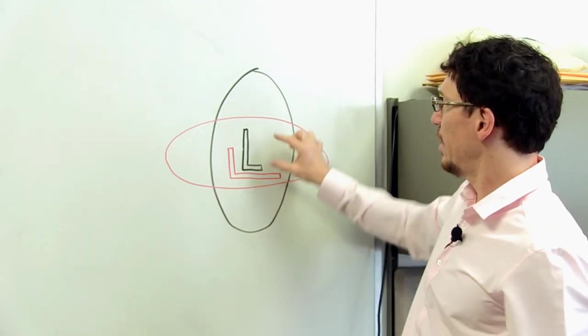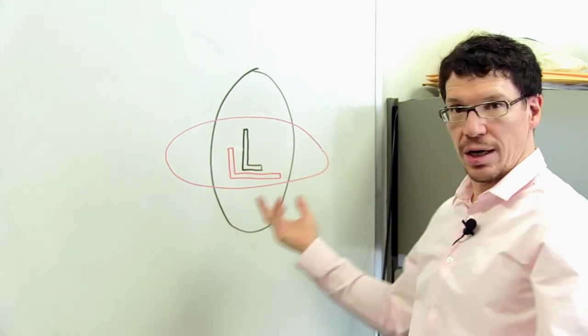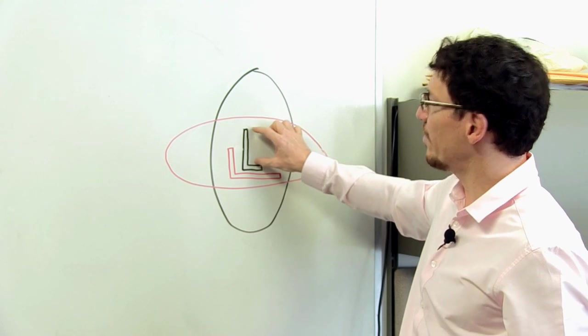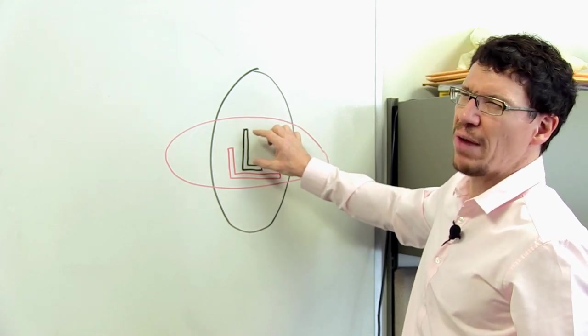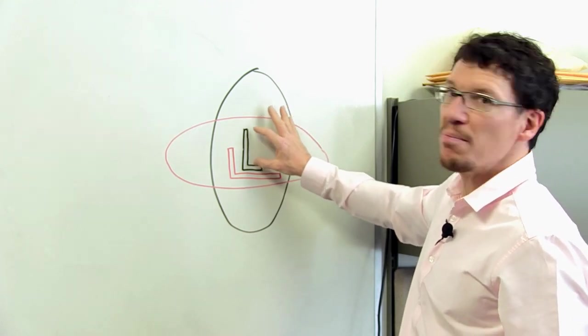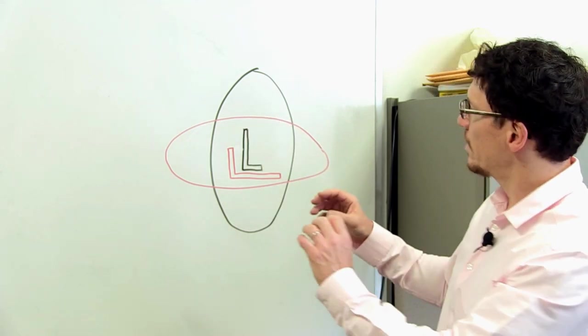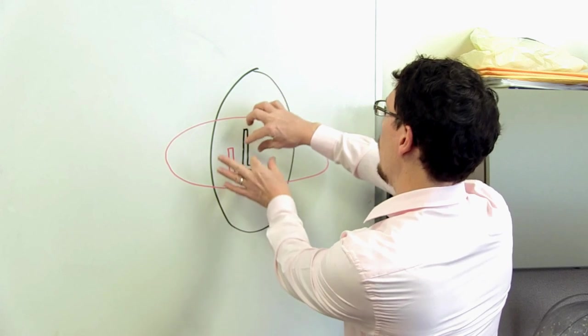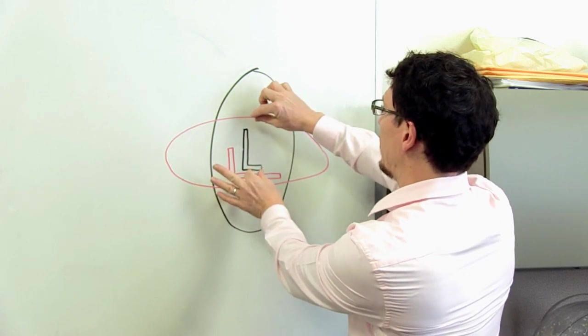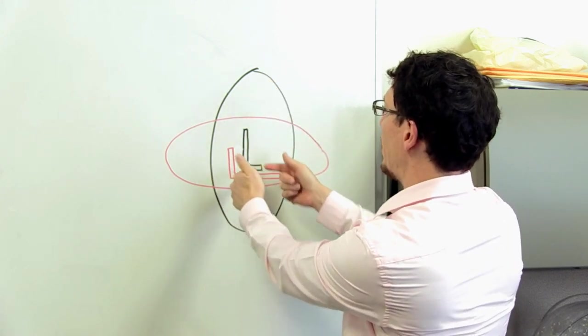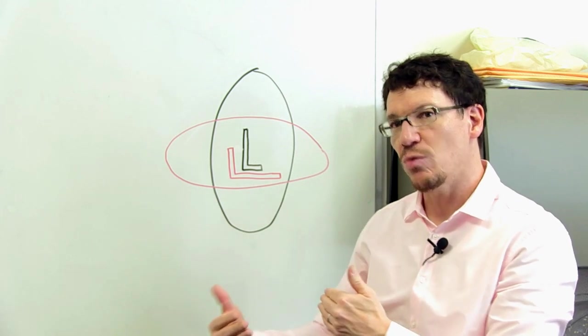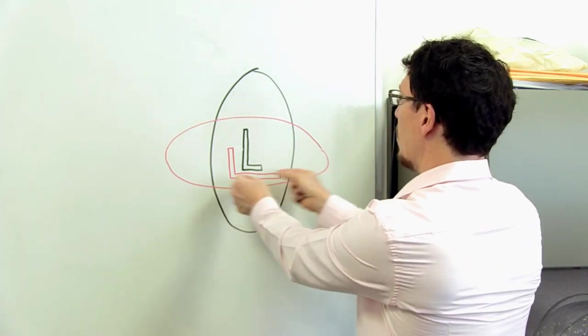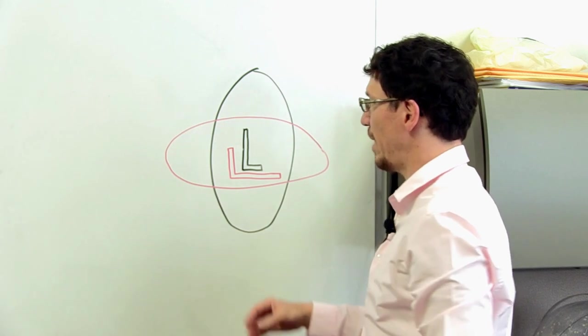The LIGO experiment was an L-shaped experiment. Each leg of the L was about three or four miles long, I forget exactly, several miles long. And as the gravitational wave went by, one leg of the experiment was expanded while the other was compressed. And then when the second part of the wave came through it was the opposite. The horizontal leg was expanded and the vertical leg was compressed.